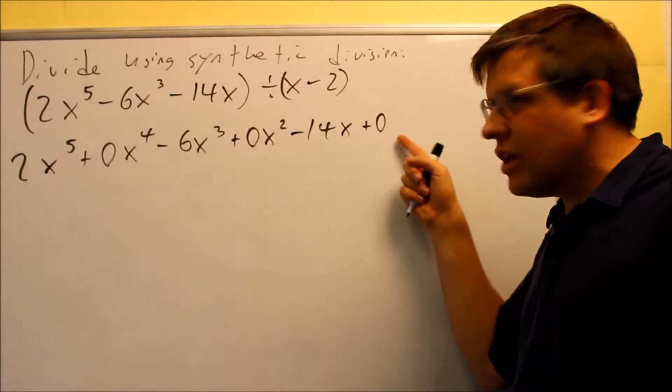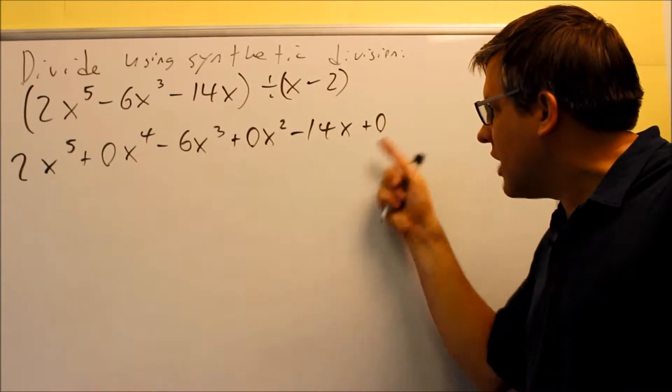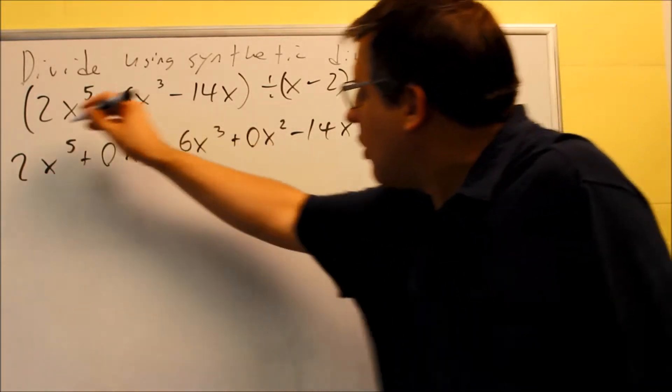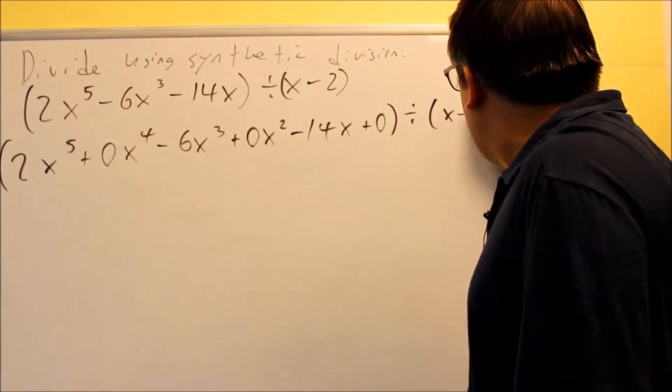The reason why is because without that 0, you wouldn't actually be able to figure out your remainder. You need to have the 0 there because that's what gets added together when you have your columns. Okay, so we have all this, and all this here is divided by x minus 2.